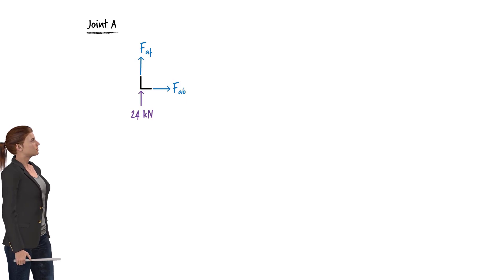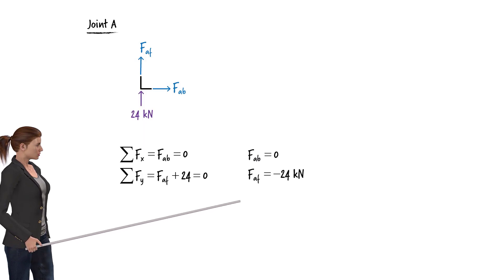The two joint equilibrium equations are written and solved for the unknown forces. What is the significance of this negative sign? The sign indicates that member AF is in compression, not tension as was initially assumed.